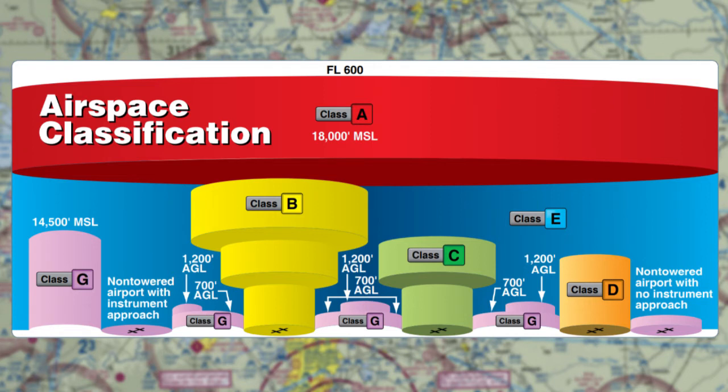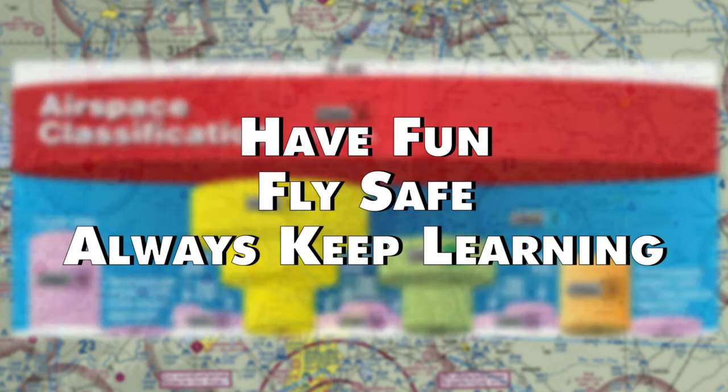And that's airspace. Make sure you re-watch this video and the previous one just to get a grasp on this airspace stuff — I know it's super confusing. The best thing is practice. Go into Skyvector, look at random parts of the country, and try to figure out the airspaces from the surface all the way up to Class Alpha airspace. Until we meet again, have fun, fly safe, and always keep learning.